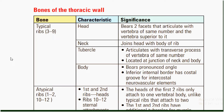The head bears two facets that articulate with the vertebra of the same number and the vertebra superior to it. The neck of the typical rib joins the head with the body. The tubercle of the typical rib, ribs three to nine, articulates with the transverse processes of the vertebra of the same number and is located at the junction of the neck and the body. The body has a pronounced angle, and the inferior internal border has a costal groove for intercostal neurovascular elements.